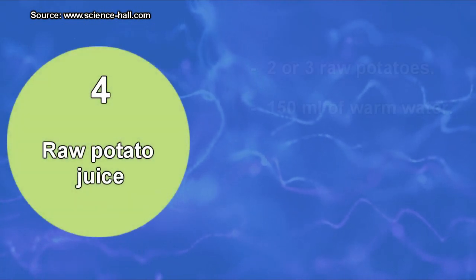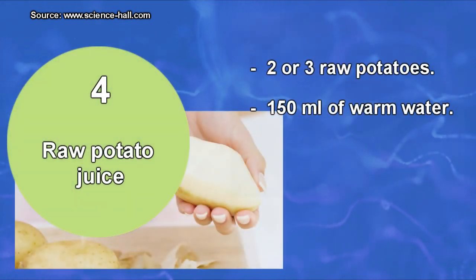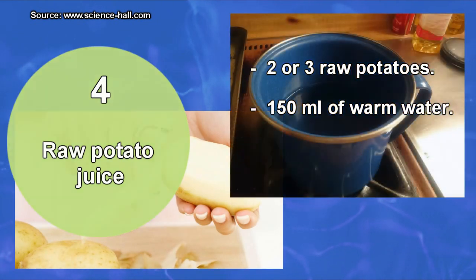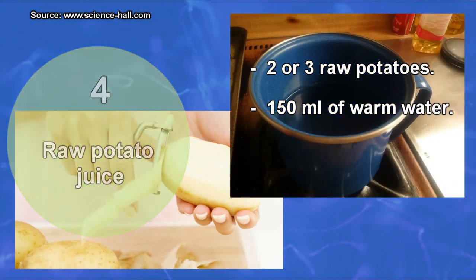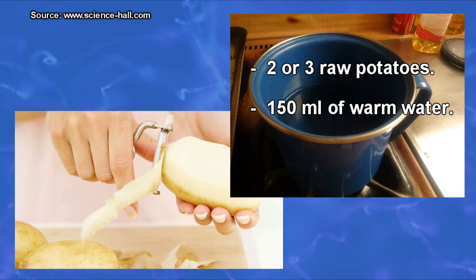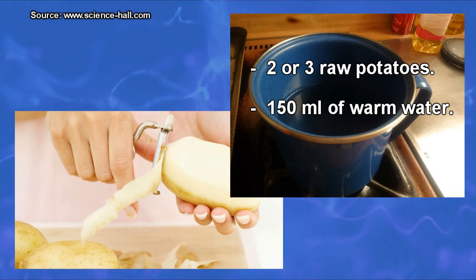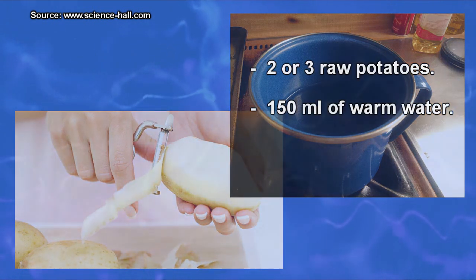Remedy 4: Raw potato juice. Its preparation requires two or three raw potatoes and 150 milliliters of warm water. The potatoes are peeled, ground, mixed in the water, and left to rest overnight. The next day, the preparation is strained and a cup is taken 30 minutes before breakfast and another 30 minutes before dinner.